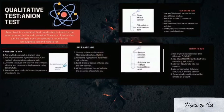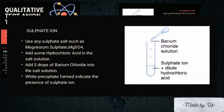For sulfate ion, use any sulfate salt such as magnesium sulfate. Then, add some hydrochloric acid into the salt solution, followed by five drops of barium chloride into the salt solution. A white precipitate forming indicates the presence of sulfate ion.